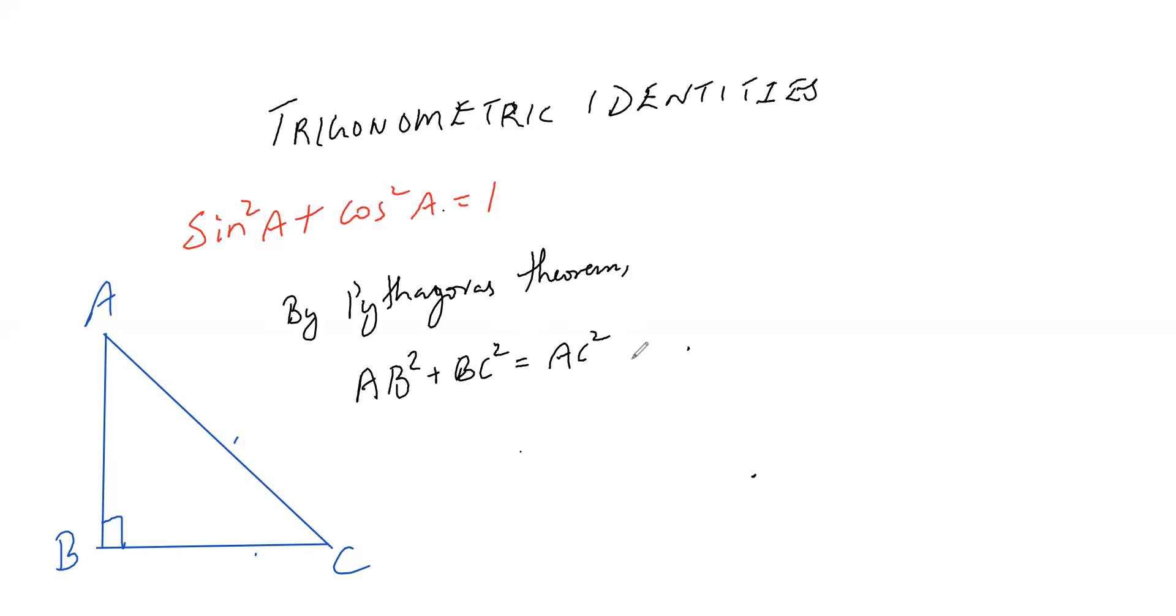Now, this is my equation one. Now divide the equation one by AC square. That's all. So what I'll get? AB square by AC square plus BC square by AC square is equal to 1.